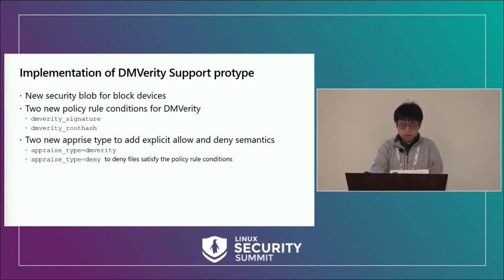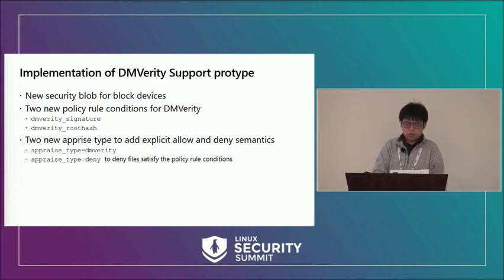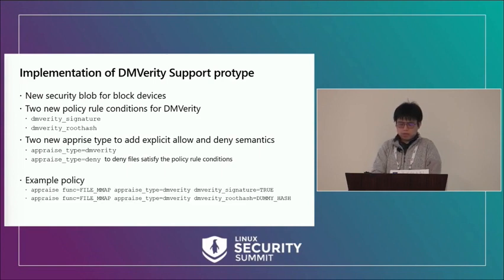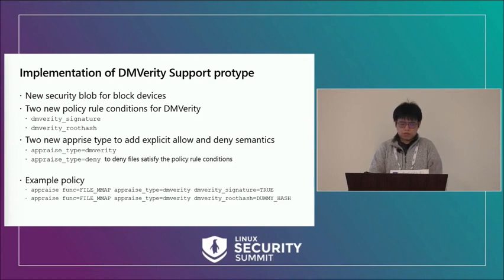The first new appraised type, `appraisedtype=dm-verity`, will allow files from a DM-verity volume if the DM-verity condition rules are satisfied. The parser ensures that if this appraised type is used, there must be DM-verity rule conditions inside the rule. The second, `appraisedtype=deny`, will deny files if the rule condition is satisfied. As examples, the first rule allows files to be NMAPed if from a signed DM-verity volume; the second allows files if the volume hash matches the hash in the rule condition.